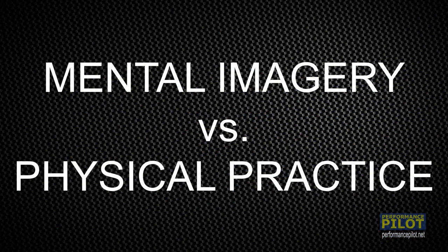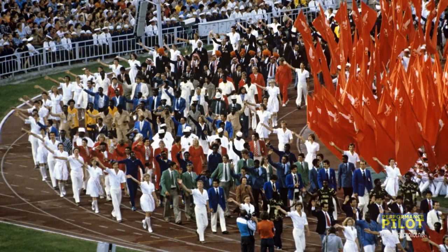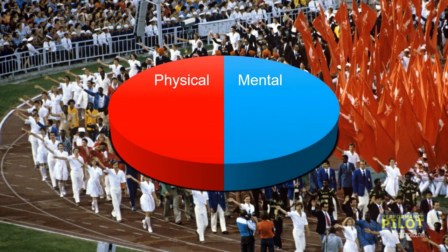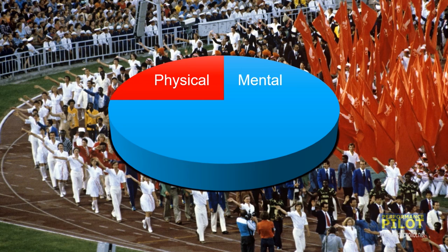So now we've seen that mental imagery can be used in place of physical practice. The obvious question is, which is better? How effective is mental imagery compared to actually physically doing something? In another study, 80s-era Soviet Olympic athletes from various sports were split into four groups. The first group trained entirely with physical practice. The second group split their training 75% physical and 25% mental imagery. The third group split 50-50, and the fourth group spent 25% of their time training physically and 75% mentally. At the end of the study, the group that made the biggest gains was the fourth group. Interestingly, the group that trained 100% physically actually improved the least. So not only does mental imagery work, it can actually work better than physical practice alone.